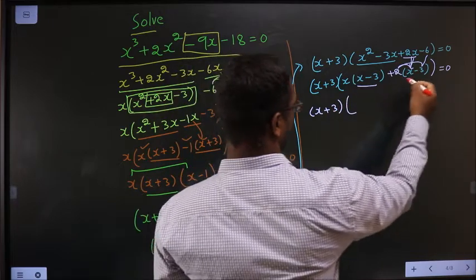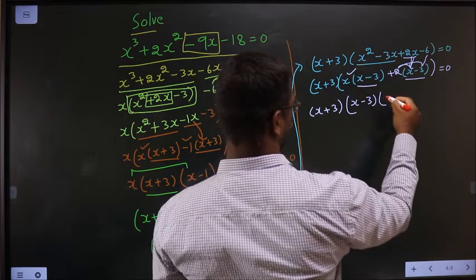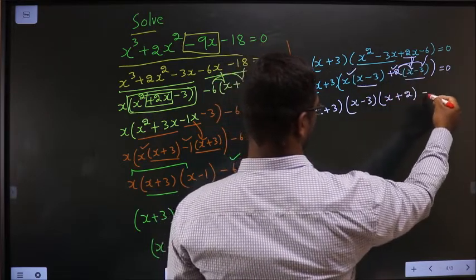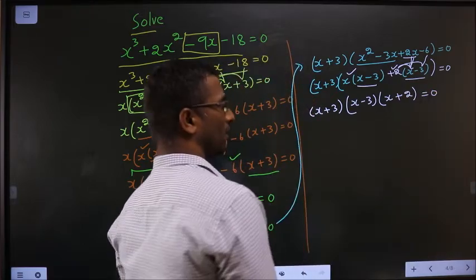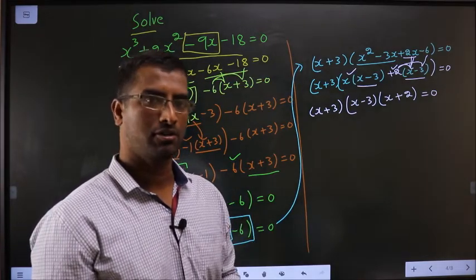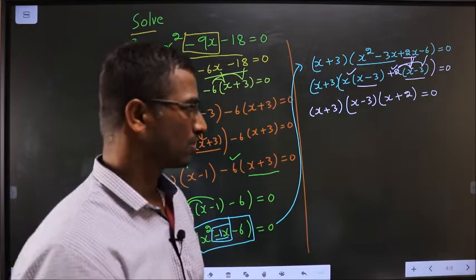Next, take x minus 3 common. So I am left with x here and here left with plus 2, equal to 0. Now, product of these three brackets equal to 0. That could only happen if either one of them equal to 0.